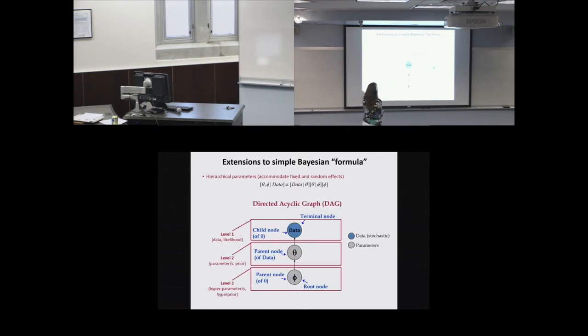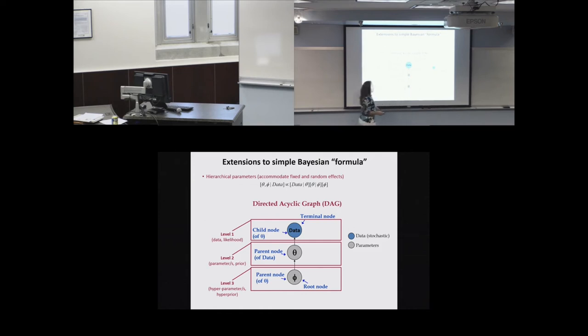An example would be a bunch of site effects that vary around some distribution, with a variance term describing variability among sites — that's a hierarchical model for site effects and the variance term.